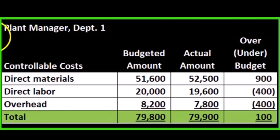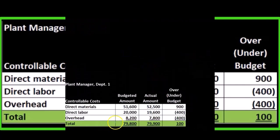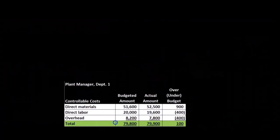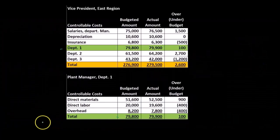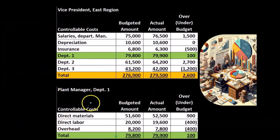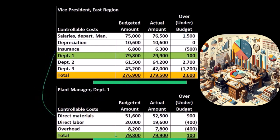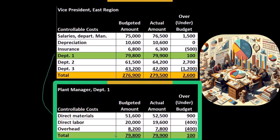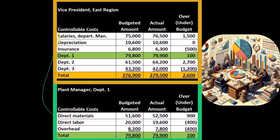We have the plant management department one — this is the lower level. We could think of it like the department level, the store level. We have the direct materials, the labor, the overhead, and then those totals are going to be included in the report that goes to the vice president for the region. So this report — if we were department one — we report here and say, here's our report. This is our summary information.